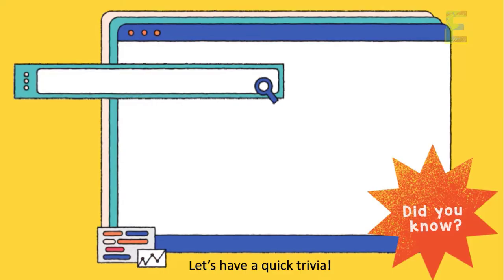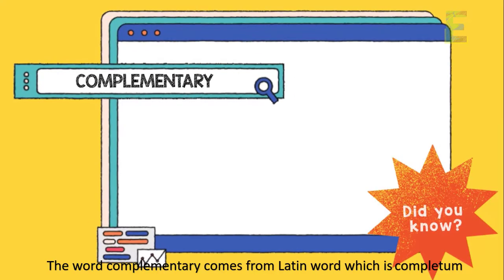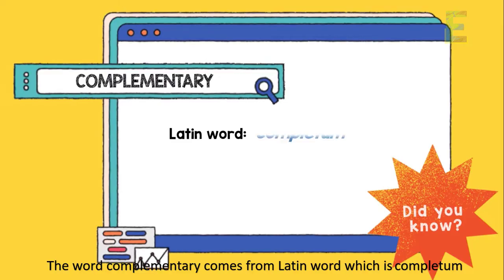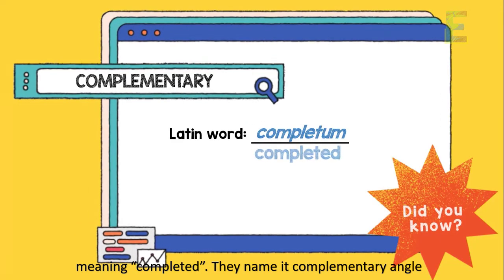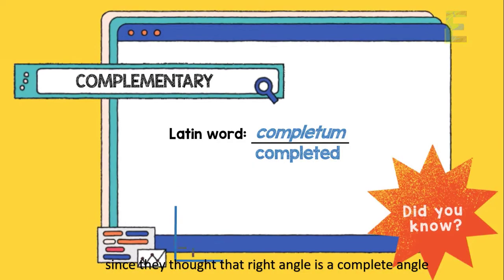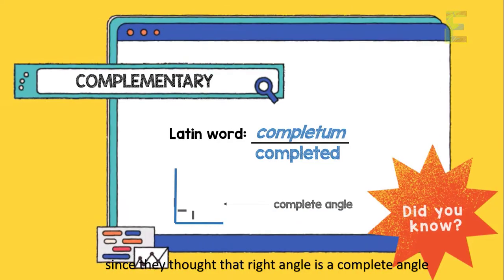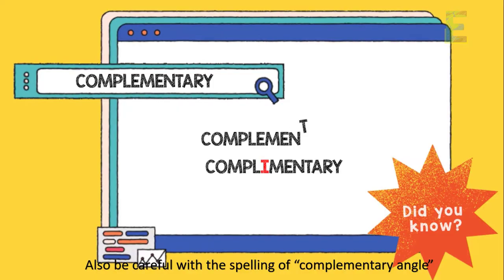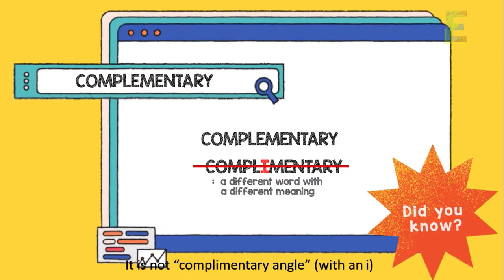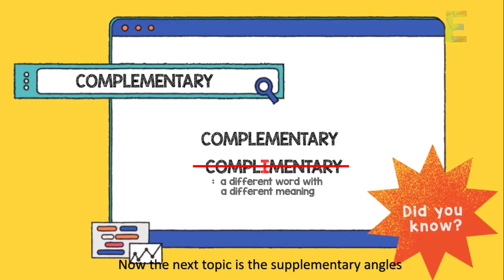Now let's have a quick trivia. The word complementary comes from the Latin word completum, meaning completed. They named it complementary angle since they thought that a right angle is a complete angle. Also, be careful with the spelling of complementary. Not the word with an I.